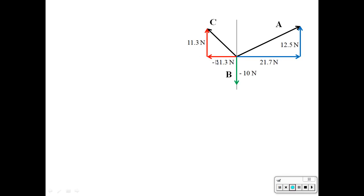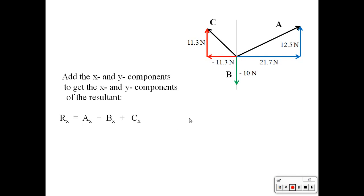So now we have all of our components, X and Y components, for each of our individual vectors. So now what we can do is add the X components together to find the X component of the resultant. R sub X is going to be A sub X plus B sub X plus C sub X. Substituting in the numbers, it turns out to be positive 10.4 Newtons.